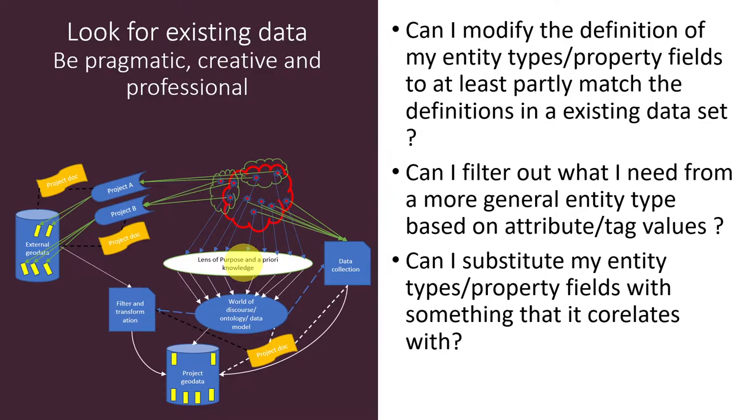There's that possibility where you can say: can I substitute my entity types or property fields with something that I know correlates with them? So you know that some pollutant correlates with some color of the soil. Then instead of measuring the pollutant, you could perhaps find imagery data with the color of the soil. So can you find an indirect way of mapping it? That will save you a lot of time.